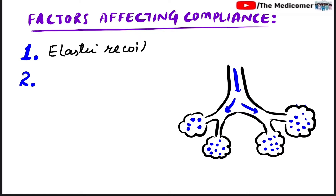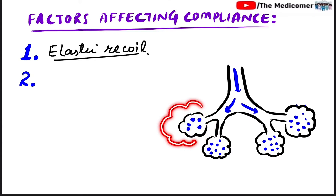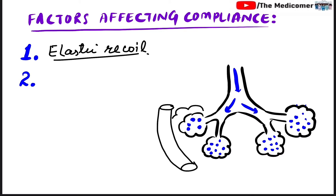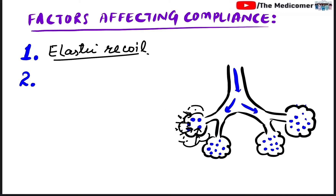Once gas molecules enter the alveoli they cause distension. Once the alveoli are distended, recoil pushes the gas molecules into the nearby blood vessel, so recoil is essential for the normal physiology of lungs. However, recoil works in the opposite direction — because of recoil, the alveoli tend to go back to their original position. So elastic recoil has an inverse relationship with compliance.